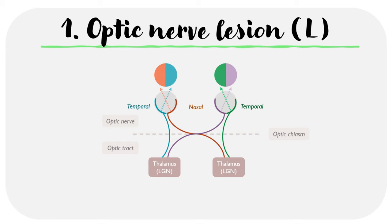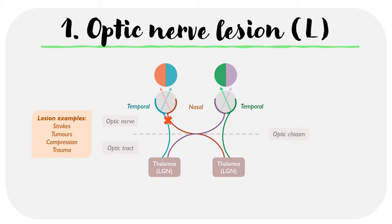Let's now start by taking a look at each type of lesion, starting with an optic nerve lesion. A lesion can be defined as anything which disrupts the flow of signals from one part of the nerve fiber to the other — for example, strokes, tumors, compression, or any type of trauma. In this case we're going to start by looking at the left optic nerve lesion, which affects the upper part of the diagram.